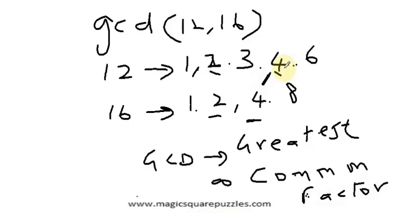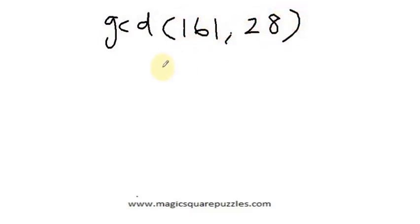These two numbers, 12 and 16, are very small and it is easy to find their GCD. But once we go into higher-order numbers, we need a method. Now we will see how to find the GCD of 161 and 28.